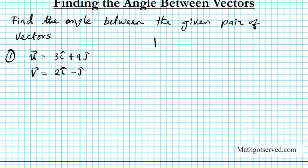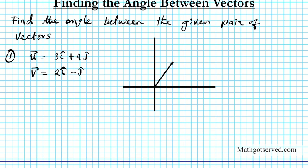Let me make a coordinate system right here. I'm going to draw these two vectors from the origin. The first one goes in the x-direction: to the right 3, and then up 1, 2, 3, 4 — so vector u goes in a direction like this. And then vector v goes to 2, 1, 2, and then down negative 1, so something like this for vector v.